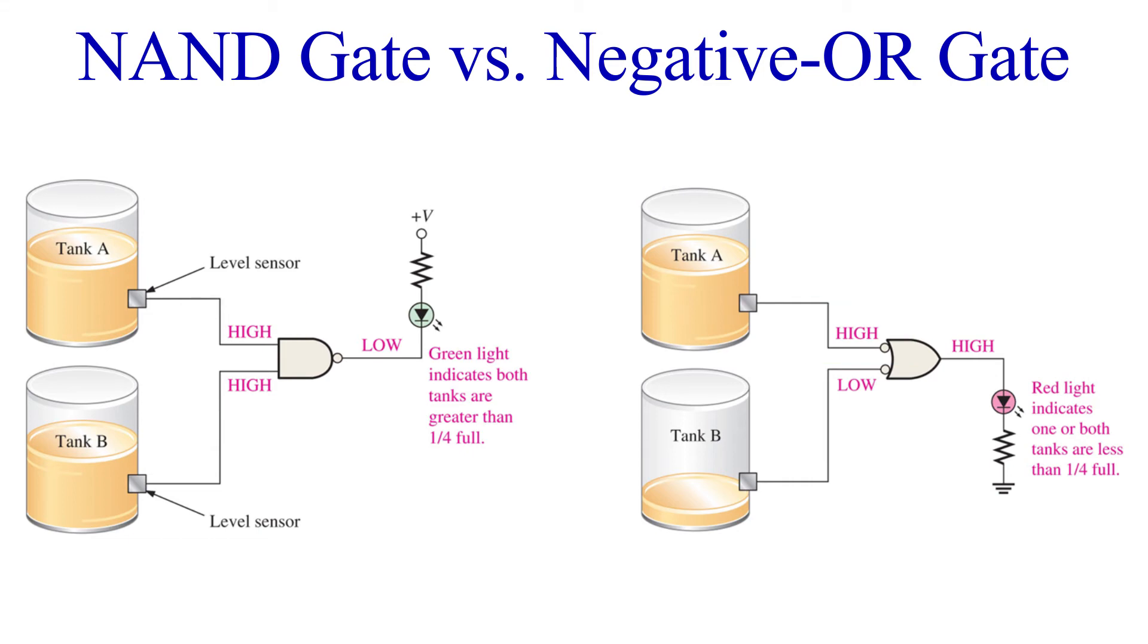As long as the tank is over 25% full, the sensor output is high at a level of 5 volts. Once it drops below 25%, the sensor goes low and produces 0 volts. Now the plan is to implement a green LED to indicate when the tanks are both above 25% full.